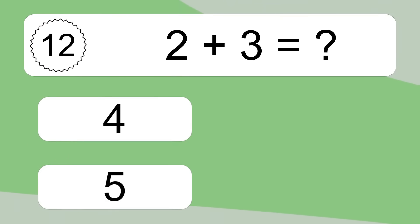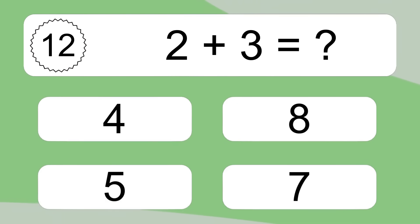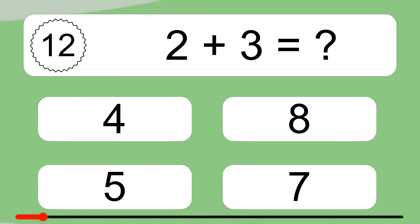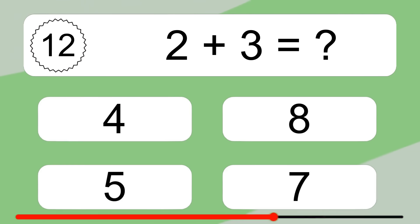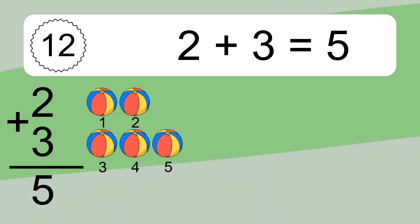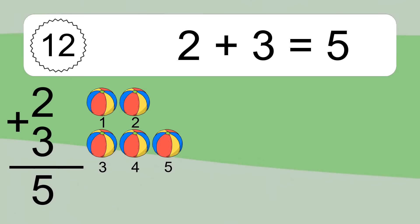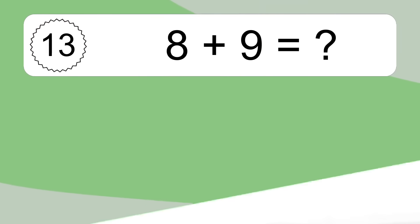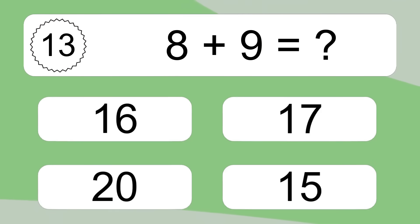2 plus 3 equals 5. Let's count it: 1, 2, 3, 4, 5.